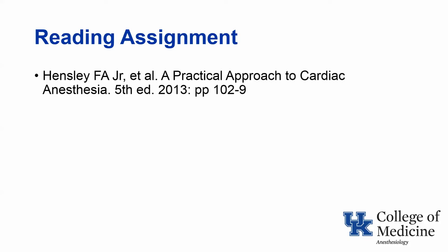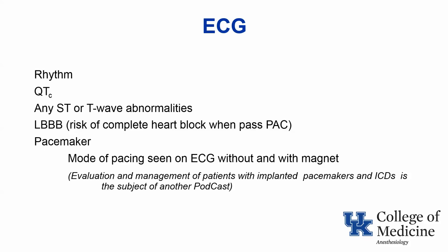As far as the ECG, we won't go into any details, but it's important to note what their baseline rhythm is, whether they have QT prolongation, and if they have any baseline ST or T wave abnormalities, and particularly if they have left bundle branch block because they are at risk of developing complete heart block when you pass a pulmonary artery catheter. Also note if they are being paced on the ECG. Further discussion of the management of patients with pacemakers will be the subject of another podcast.